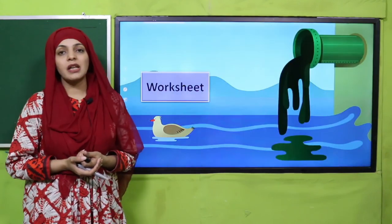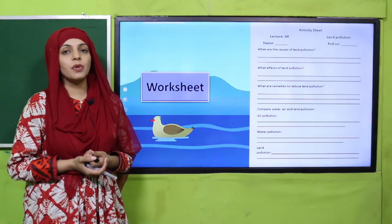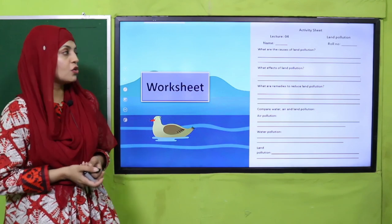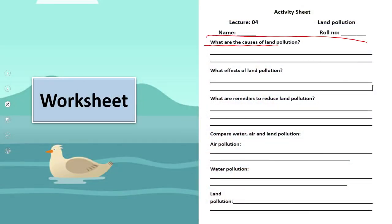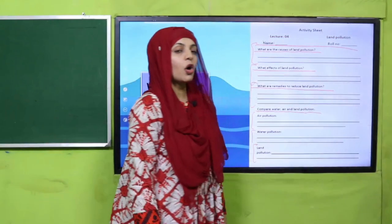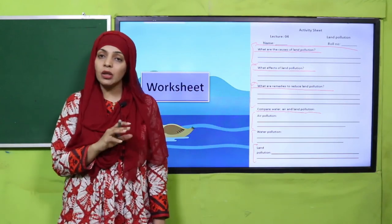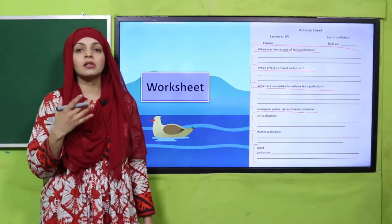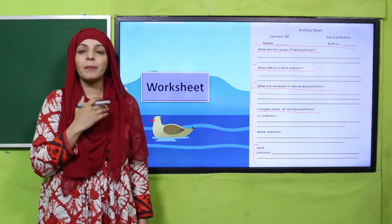Now is the time for practice. Download this worksheet from the description box below this video. Get it in print form from your teacher. Write down your name and roll number. Write down the causes of land pollution, then the effects, then the remedies to reduce it. Oske baad compare karein air pollution, water pollution, and land pollution — because we have studied all three types of pollution: causes, effects, impacts, and preventive measures.